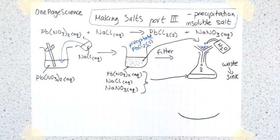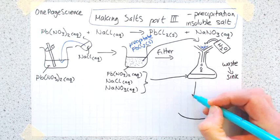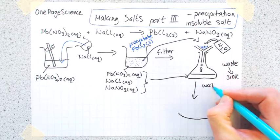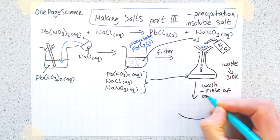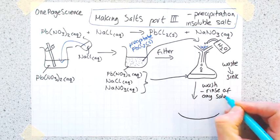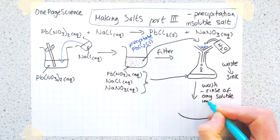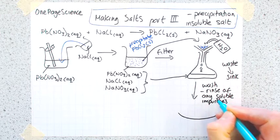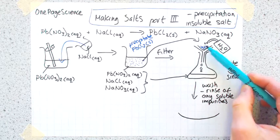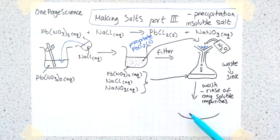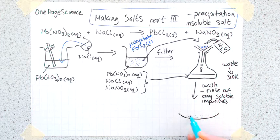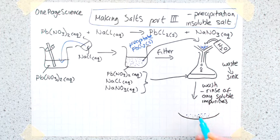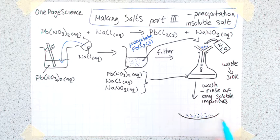You wash it with water to rinse off any soluble impurities. Then you take your blue solid, and at this point you can tip it out into a dish. Here we'll have a dish with all our solid.